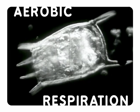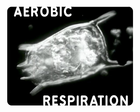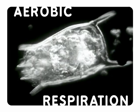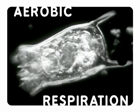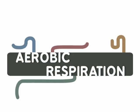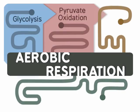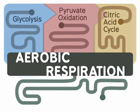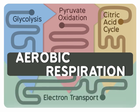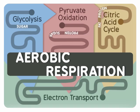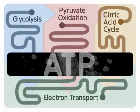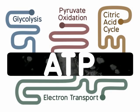Aerobic respiration is the most important process used to produce energy for a cell. It involves several pathways, including glycolysis, pyruvate oxidation, the citric acid cycle, and electron transport. Various sugars, fats, and proteins enter these pathways and they can all be broken down to produce ATP energy for a cell.